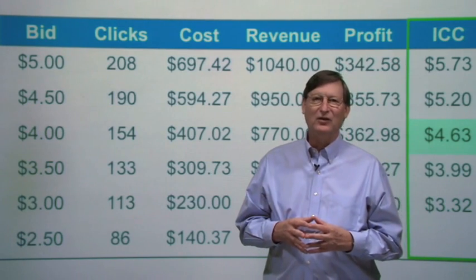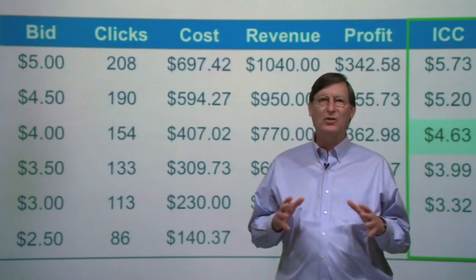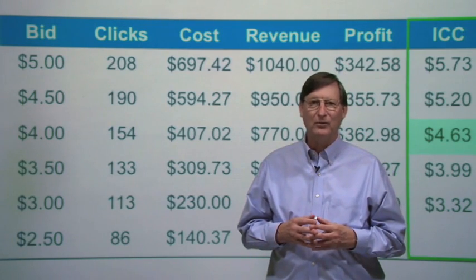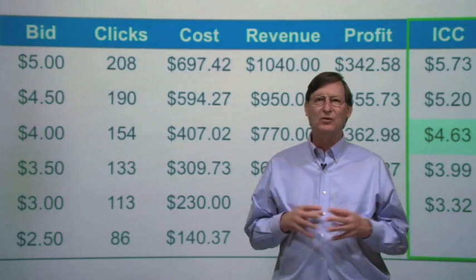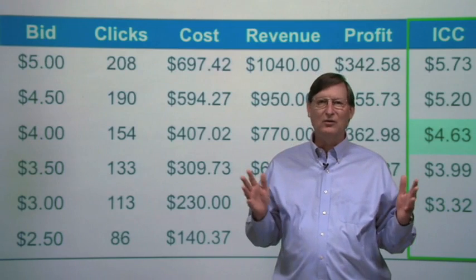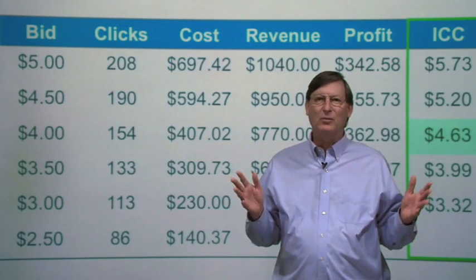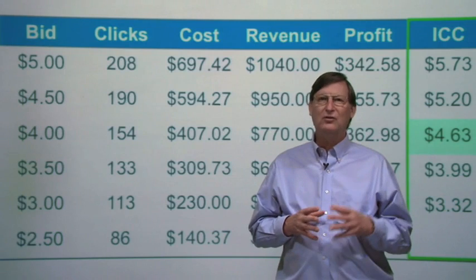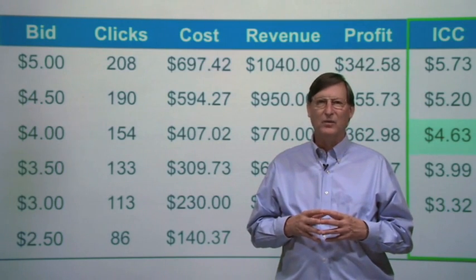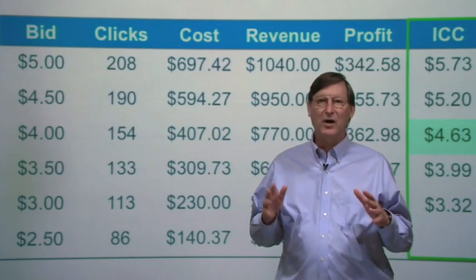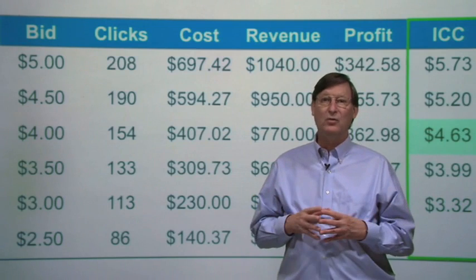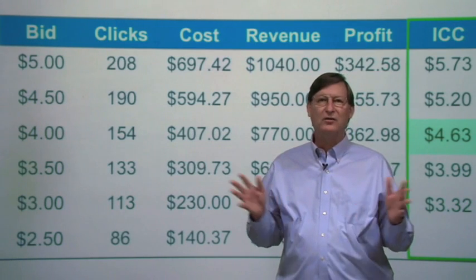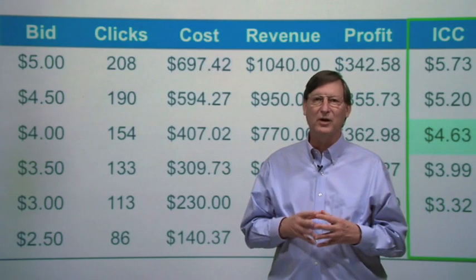By calculating your ICC and value per click, you can be sure that you're bidding at or near the profit-maximizing level for each of your keywords. Now, over time conversion rates will change due to economic conditions, seasonal conditions, and the like — for example, the conversion rates for skis goes up in the winter. Hence you should track your value per click carefully. The values in Bid Simulator may also change, so you should keep a close watch on those numbers as well. It pays to redo these calculations on a regular basis to make sure your bids are optimal.